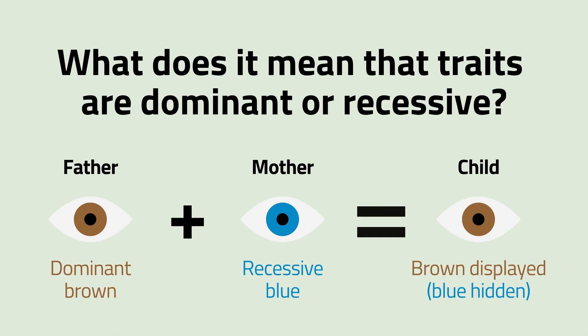What does it mean if traits are dominant or recessive? Many people believe that the word dominant in dominant traits means that it's very common, but this isn't actually true. What it means is that when the dominant gene is present, it will be expressed over the recessive gene. So a dominant gene could be very rare, but if it's there, it will be expressed.